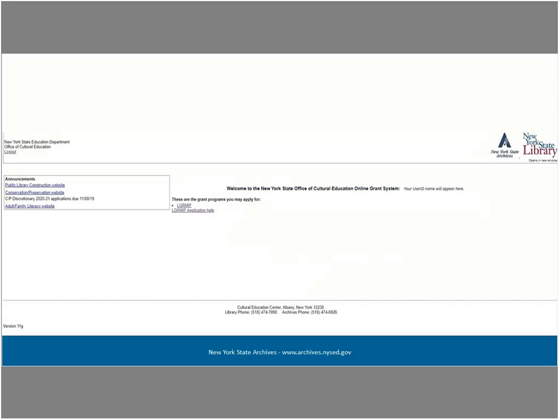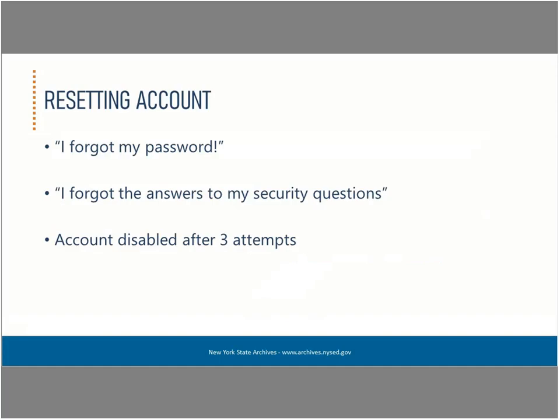After you have successfully logged in, this is your home page while in the eGrants system. If you have an account but have forgotten your password or it has expired, when you get to the eGrants login page you will see a link for forgot your username or password. Click on the link for password and follow the prompts to reset your password — this is where you will need your security questions and answers. You have three attempts to access your account, after which your account will be disabled. At that point, you will need to contact the grants administration unit and we will reset your account.